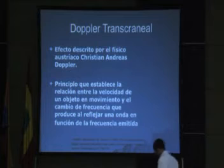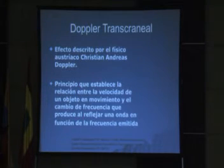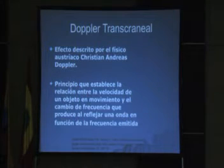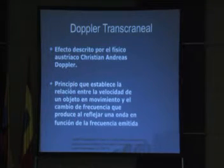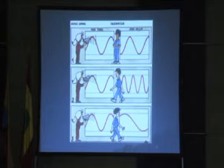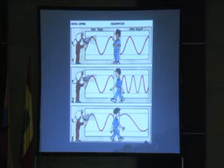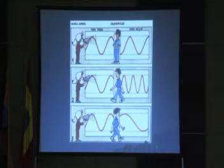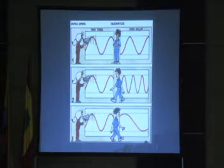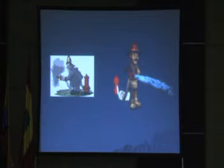El efecto Doppler fue descrito en el siglo XIX por Christian Andreas Doppler. Establece, en principio, la velocidad que tiene un objeto en movimiento, el cambio de frecuencia que produce al reflejar una onda. Para más facilidad, es simplemente este gráfico: esta señora está hablándole a este señor que está parado. El efecto Doppler es simplemente cómo se refleja la onda en cuanto este señor se mueve hacia la señora o se aleja de ella.